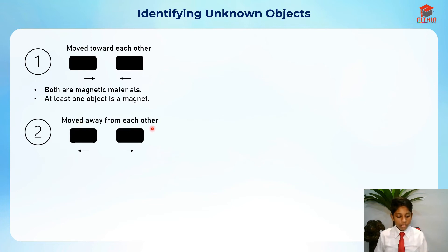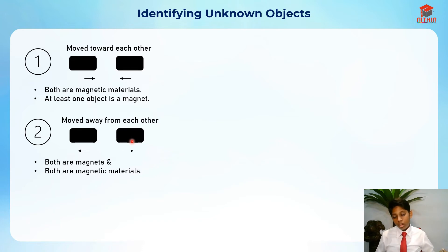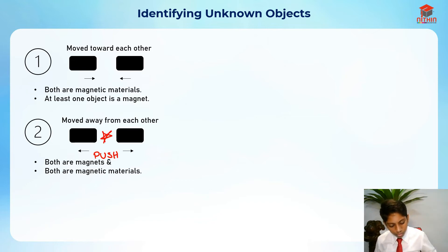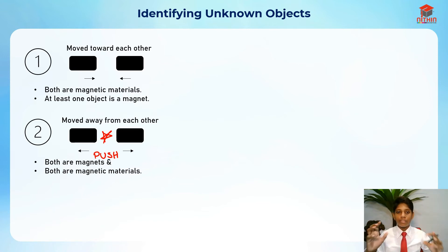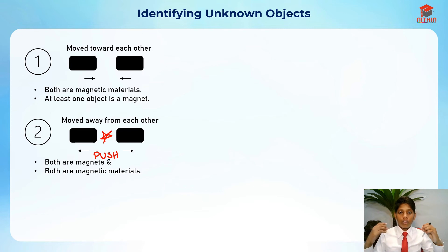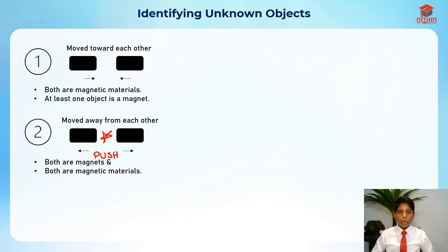For scenario two: the objects move away from each other. At this point, both of them must be magnets in order to give a push force, and both are also magnetic materials. To identify whether an object is a magnet, place it beside a known magnet. If they repel or attract, it's a magnetic material. But if it repels, you can confirm it is a magnet. If it only attracts, you can only conclude it is a magnetic material — you are not sure whether it's a magnet.